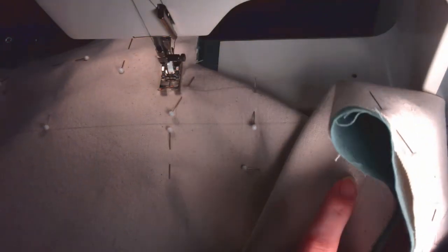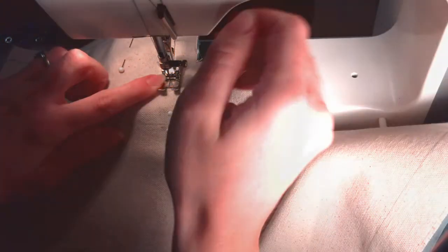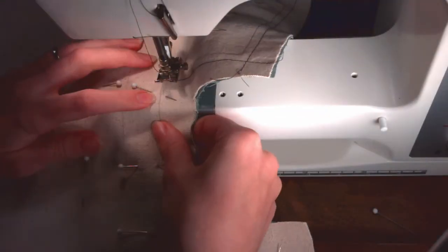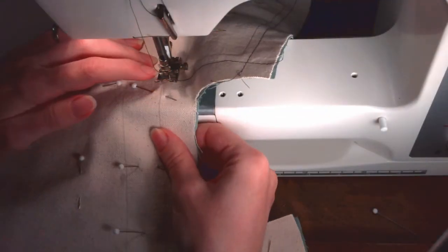When you reach one quarter inch from the interior corner, stop, walk the machine until the needle is down. Then lift the foot and turn the work until the presser foot is lined up with the next line. Put the foot down and continue sewing until the next corner.